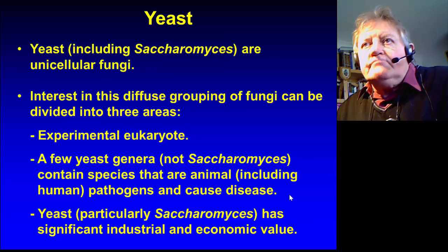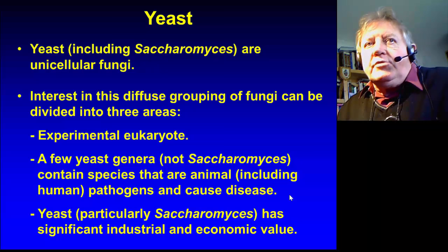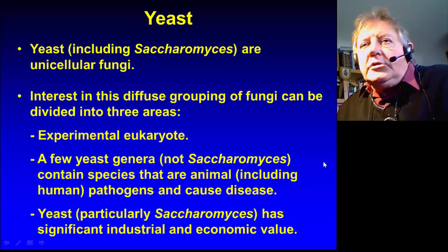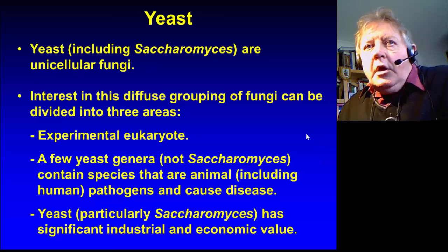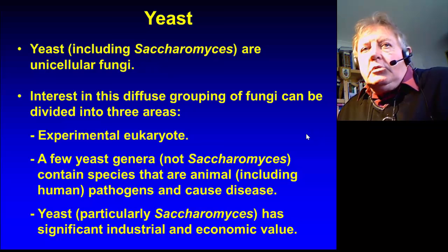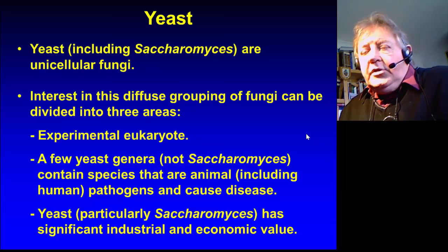Interest in this diffused grouping of fungi can be divided into three areas. First of all, it's an experimental eukaryote. It has very similar structure to mammals, including humans, and therefore it has been used in the laboratory as an experimental microorganism for many decades. A few yeast genera, not Saccharomyces, contain species that are animal and human pathogens and cause disease. Yeast, particularly Saccharomyces, has significant industrial and economic value, and this area I will focus on during my talk.